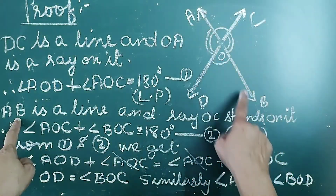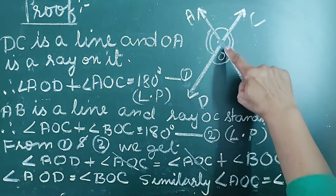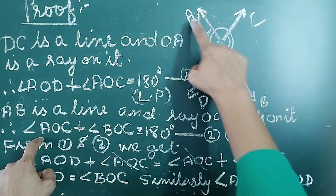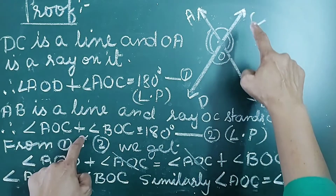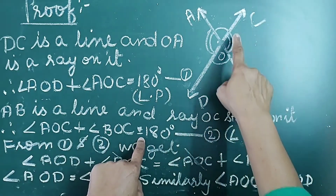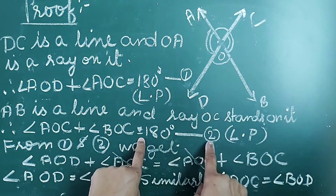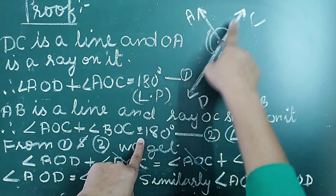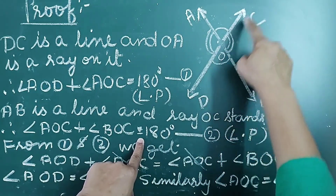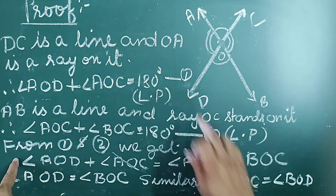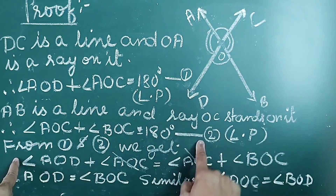Now, AB is a line and OC is a ray that stands on it. Therefore, angle AOC plus angle BOC equals 180 degrees — that is equation number 2. The reason is that angle AOC and angle BOC form a linear pair.